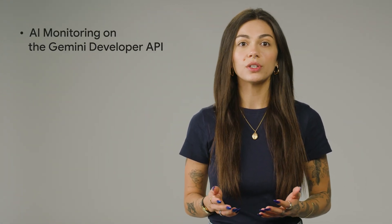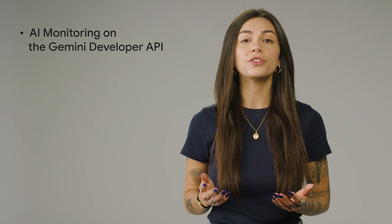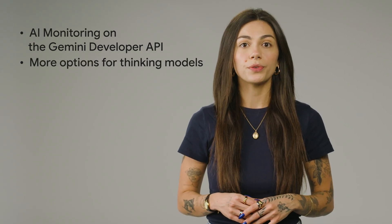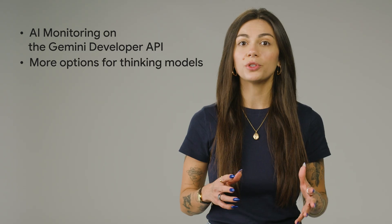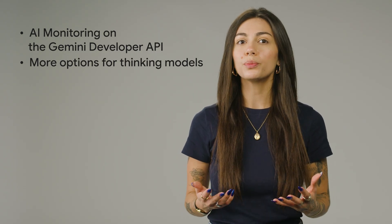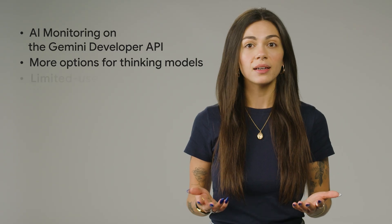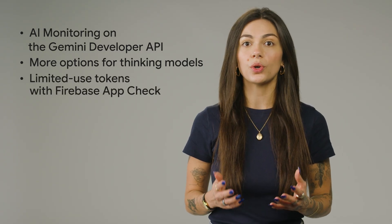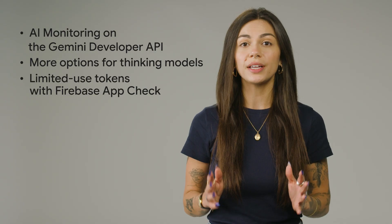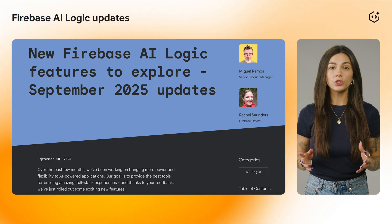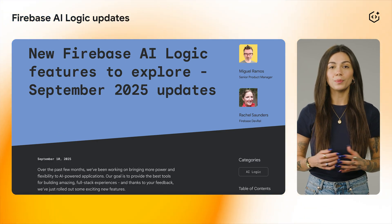Last, we've launched several new capabilities that give you more control and observability of your AI features. For example, you can now debug and optimize your AI features with AI monitoring if you use the Gemini Developer API. We have added support for several configurations and options for thinking models, which can improve the model's reasoning and multi-step planning abilities. And we now have support for limited-use tokens with Firebase AppCheck, giving you an extra layer of protection. To know more about each of these new capabilities, take a look at this blog post.